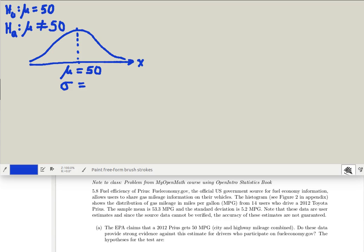However, at this point, we don't know what that is. We took a sample from this population. The sample size was 14. The mean of our sample was 53.3. It's not surprising that that's different than the mean of the population. Every sample will have a slightly different mean than the mean of the population. The standard deviation of our sample was 5.2.